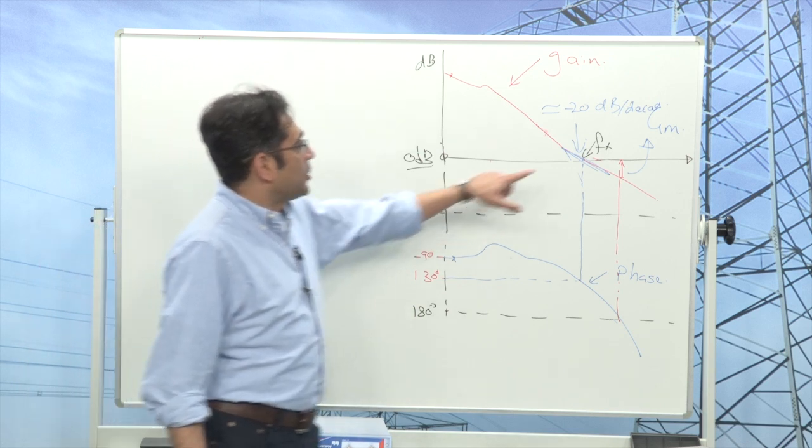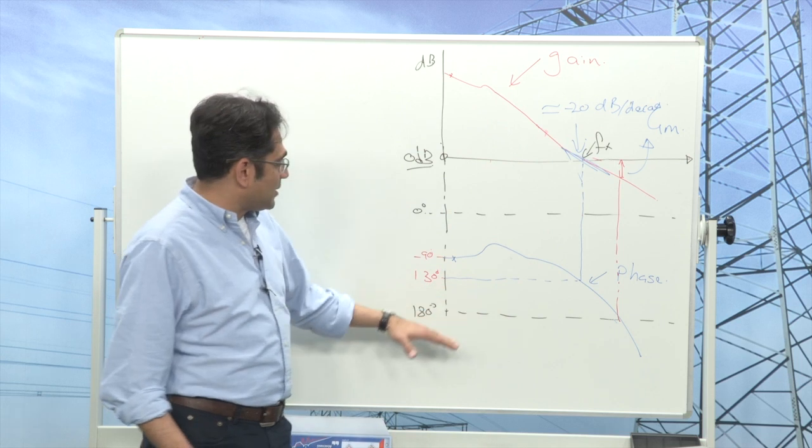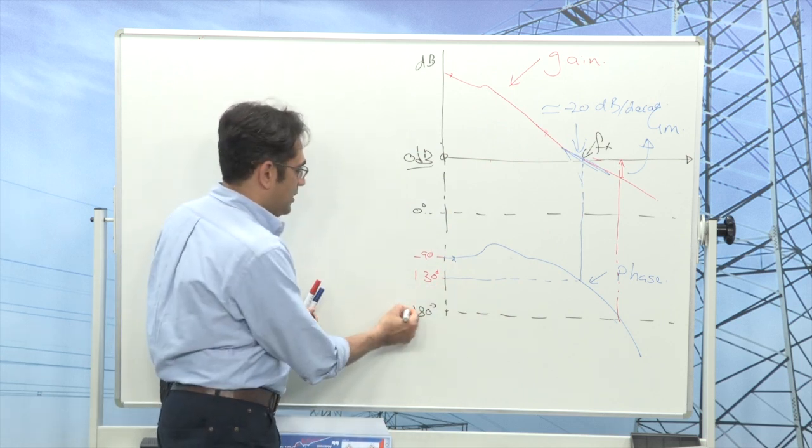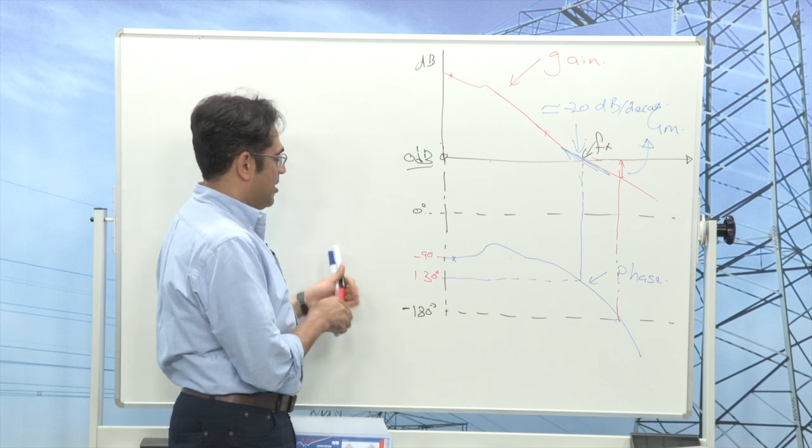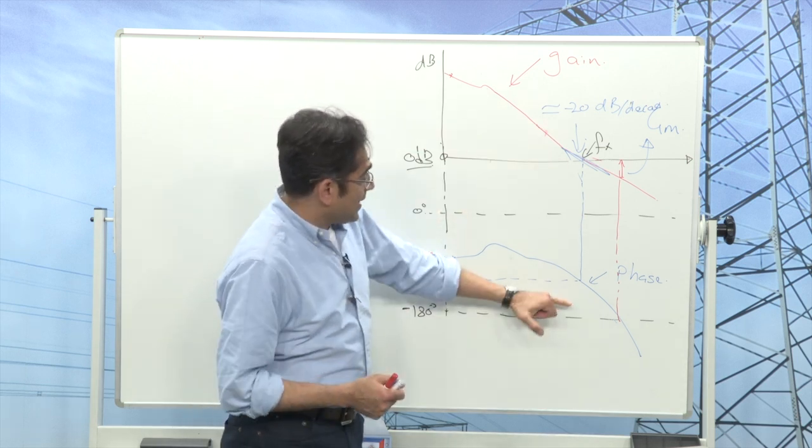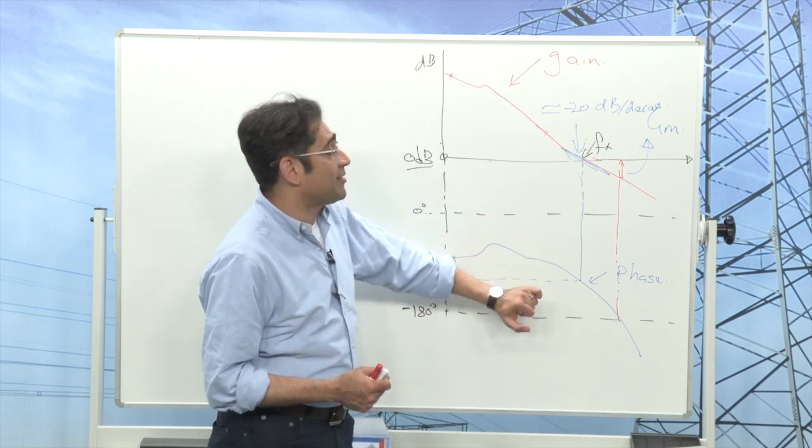We talked about the crossover frequency and the phase margin. We discussed how much above minus 180 degrees it had to be in order to have a stable power supply.